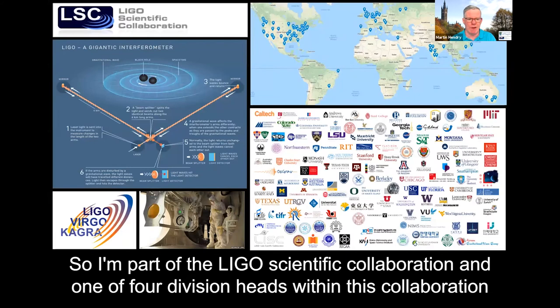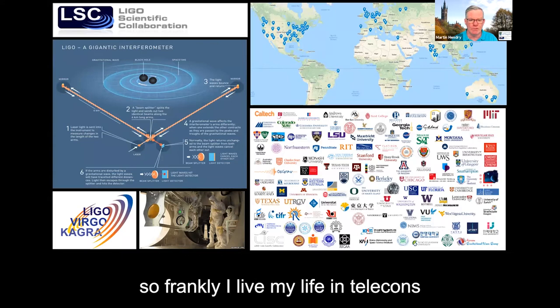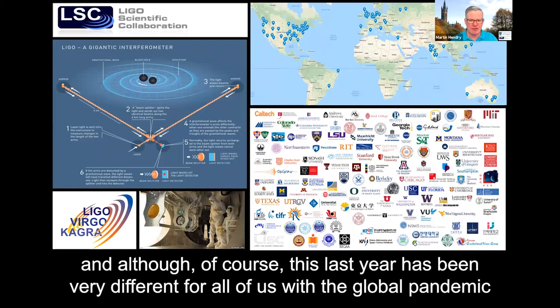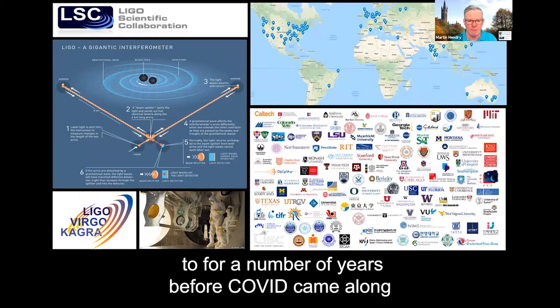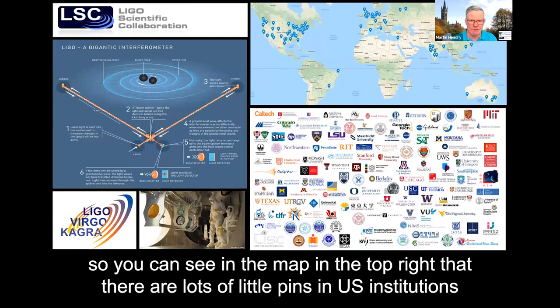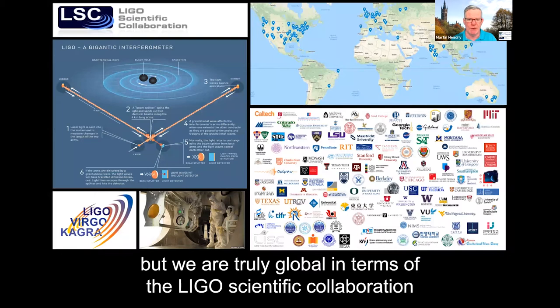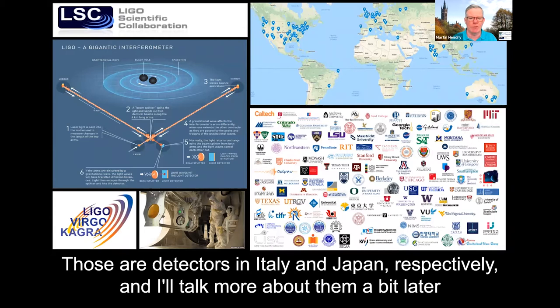So I'm part of the LIGO Scientific Collaboration. I'm one of four division heads within this collaboration. There's about 1500 members worldwide in institutions that span the globe. So frankly, I live my life in telecons. And although of course this last year has been very different for all of us with the global pandemic, talking to my colleagues via Zoom was something I was very used to for a number of years before COVID came along. And how LIGO is structured reflects the fact that the lead organizations are in the US. So you can see in the map in the top right that there are lots of little pins in US institutions. But we are truly global in terms of the LIGO Scientific Collaboration, and we also partner with our colleagues in Virgo and Kagra. Those are detectors in Italy and in Japan, respectively. And I'll talk more about them a bit later.